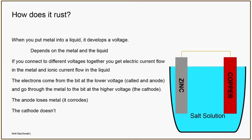The cathode takes the electrons and uses them to react with oxygen and water, typically generating alkalinity on the surface. So you can't see anything going on at the copper, but you can see the zinc getting smaller and smaller over time. If you've got a lot of patience you can sit there and watch metals corrode. It's the same kind of electricity that powers your laptop or mobile phone — it's just extra low voltage DC.